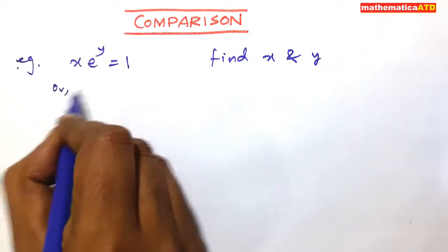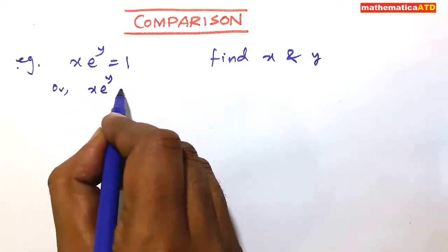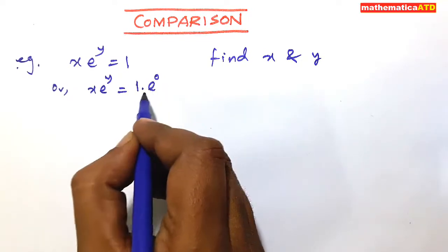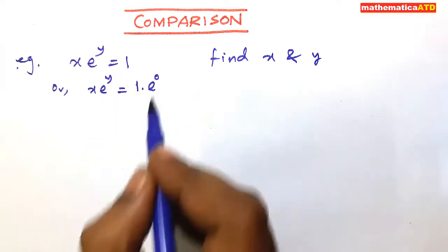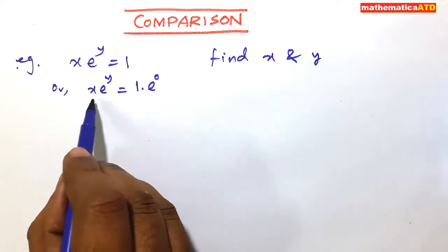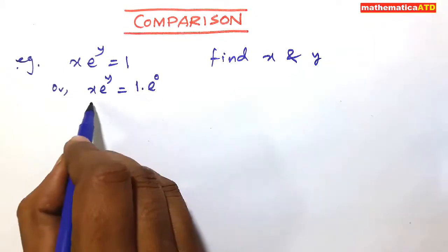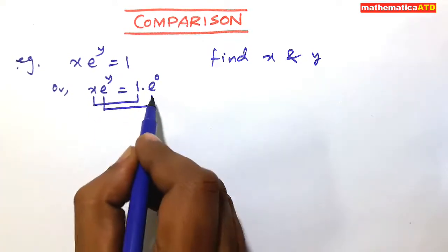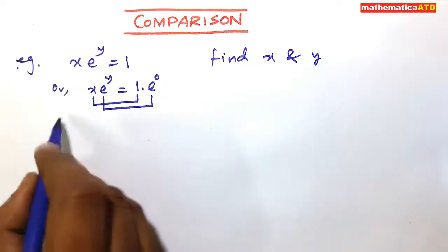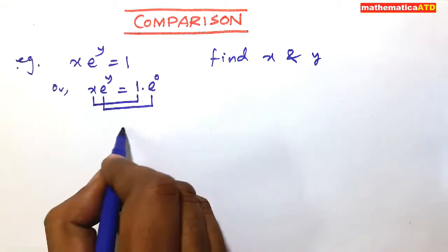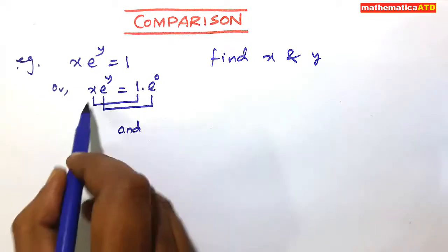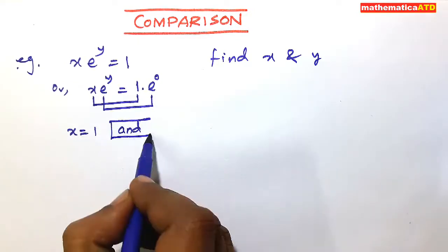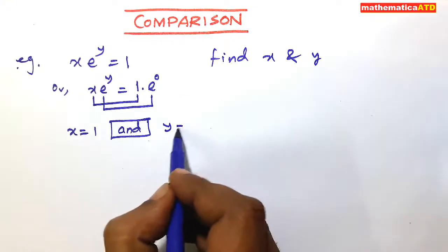For this, write x·e to the power y is equal to 1 into e to the power 0. Since e to the power 0 is equal to 1, so 1 into 1 is equal to 1. Now both sides can be compared. x is compared with 1, and e to the power y is compared with e to the power 0. In comparison, the conjunction 'and' will be used, not 'or'. So x is equal to 1 and y is equal to 0.